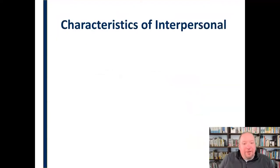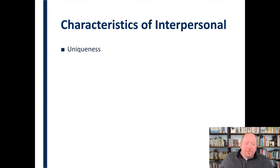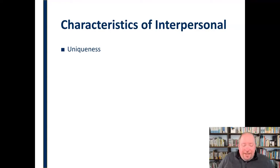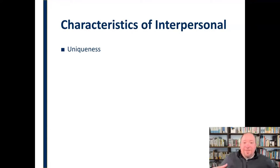Let's take a look at the characteristics of interpersonal communication — what's involved if we say something is interpersonal. It needs to have these factors involved in it. First, there's uniqueness. Interpersonal relationships are unique; they're different and distinct from one another. There is a sense of uniqueness — there's not an interchangeability in an interpersonal relationship. You can't just take one person out, throw somebody else in, and have it be the same. There's a uniqueness to that relationship.